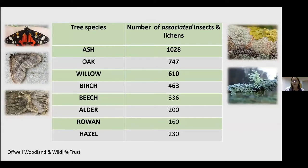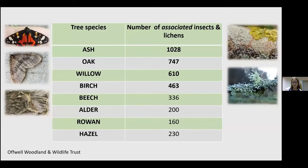Our oak — pedunculate and sessile oaks, often seen as some of the most biodiverse trees in Western Europe — has 747 associated species, far fewer than ash. Our humble willow, often seen as a weed, supports 610 species. Birch, often seen as a weedy species, supports 463 species. So when you're looking at a woodland, you're not just seeing half a dozen tree species — you're seeing those species with literally hundreds and hundreds, if not thousands, of species relating with each host tree.